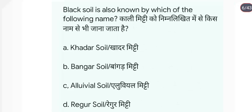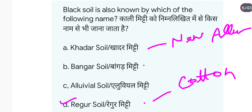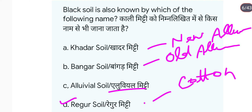Black soil is also known by which name? Black soil को Regur soil के नाम से जाना जाता है। Black soil में ही cotton उगाया जाता है। New alluvial soil को Khadar soil कहा जाता है और old alluvial soil को Bangar soil कहा जाता है। Alluvial soil मतलब जलोड़ मिट्टी।